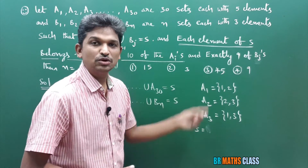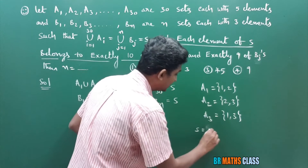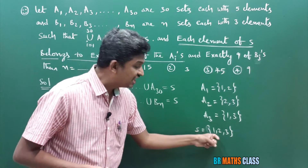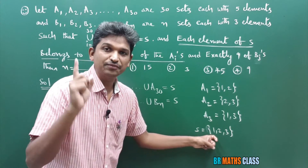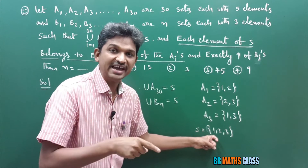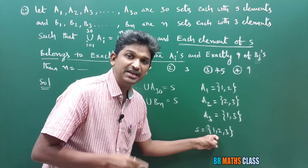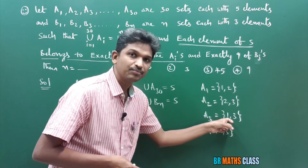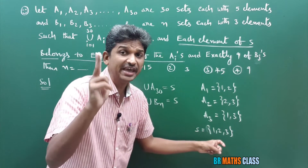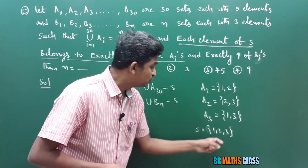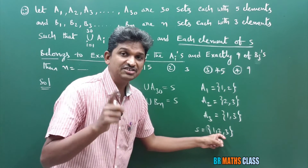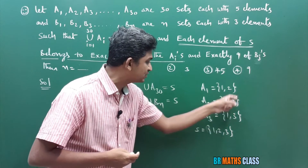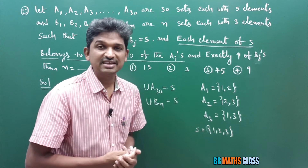What is S? S is the union of these 3 sets. Do the union of these 3 sets — what do you get? S is {1, 2, 3}. And you observe here: each element of S is in exactly 2 of the Ai's. If I take 1, that 1 is in 2 sets — the 1st set contains 1 and the 3rd set contains 1. This element is exactly in 2 Ai's. You take 2 — 2 is an element of S and that 2 is also in 2 sets only. In that way I considered this example.